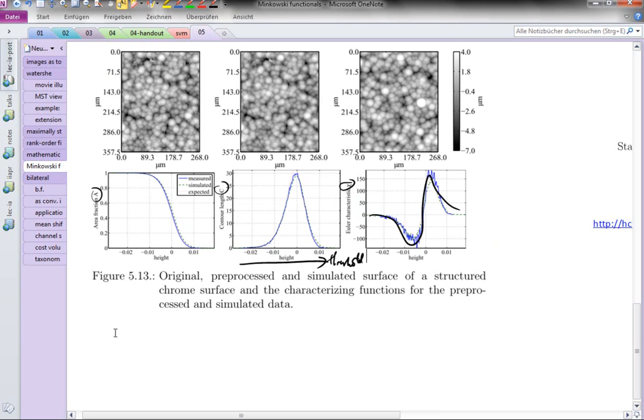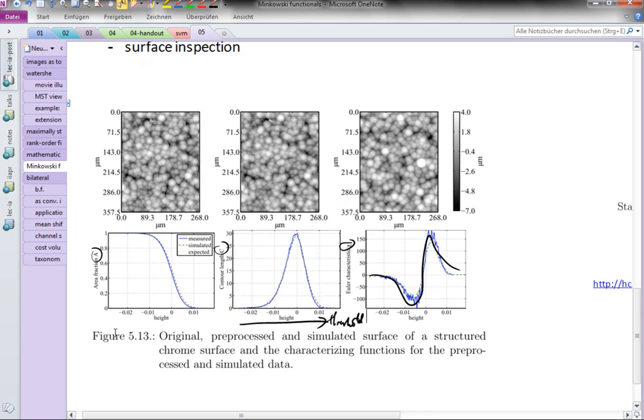These Minkowski functions are something that you can use to characterize surfaces, or you can use these to parameterize stochastic models. Let's say I am given the input image on the left-hand side and I want to find parameters for my simulation that will make the image appear as close as possible, as measured by these Minkowski functionals. Then you can vary the parameters in your stochastic model so as to produce a curve here that is as close as possible to the one that you measured empirically.